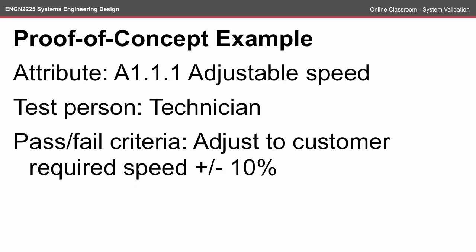Let's work through an example for a proof-of-concept test. We're going to look at attribute A1.1.1, adjustable speed. Here I need the test person to be a technician. You might also include relevant qualifications, or perhaps regulations or safety might dictate what type of person can do this test. The pass-fail criteria here is to adjust to the customer-required speed plus or minus 10%, and you would refer back to the customer requirements to find out what that speed is.